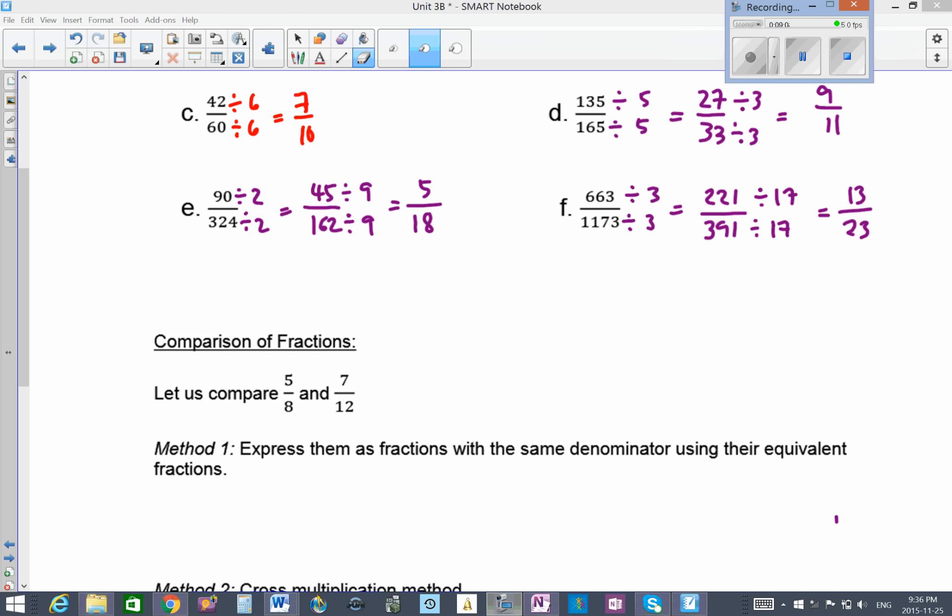Obviously, the method that we have commonly used is we express these fractions in their equivalent fractions where they share the same denominator. We have 5 over 8 and 7 over 12. Usually, we express them in a common denominator. We call it the lowest common denominator. We find the LCM of 8 and 12 here: 8, 16, 24.